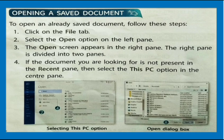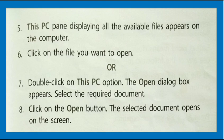Opening a saved document: to open an already saved document, follow these steps. Click on the File Tab and select the Open option. The Open screen appears in the left pane; the right pane is divided into two sections. If the document you are looking for is not in the Recent pane, select This PC option in the center pane. This PC pane displays all available files on the computer. Click on the file you want to open, or double-click on This PC option to open the Open dialog box. Select the required document and click the Open button — the selected document opens on the screen.